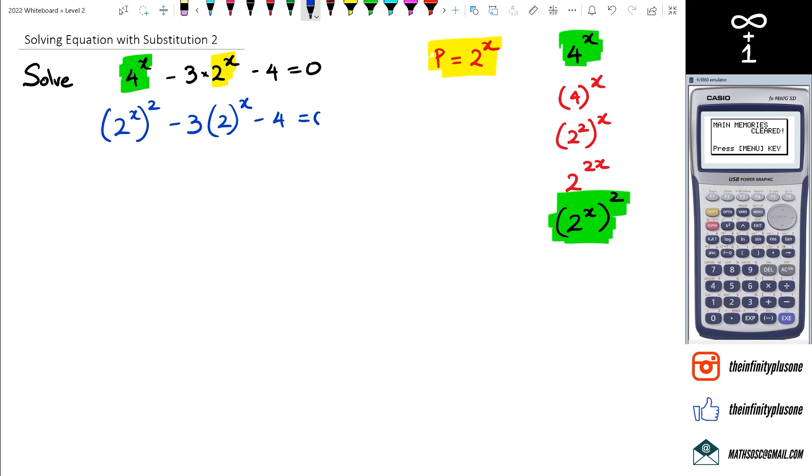Now once I do this, I know that this entire part is equal to P. And this entire part, it's P^2. So we're going to get P^2 - 3P - 4 = 0. Once we do this, this is a simple quadratic which we can factorize. So we got (P - 4)(P + 1) = 0.